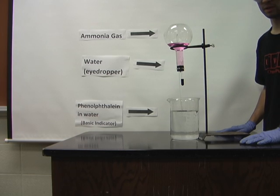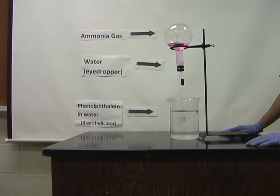phenolphthalein is a basic indicator, meaning it changes color when it is in basic conditions.